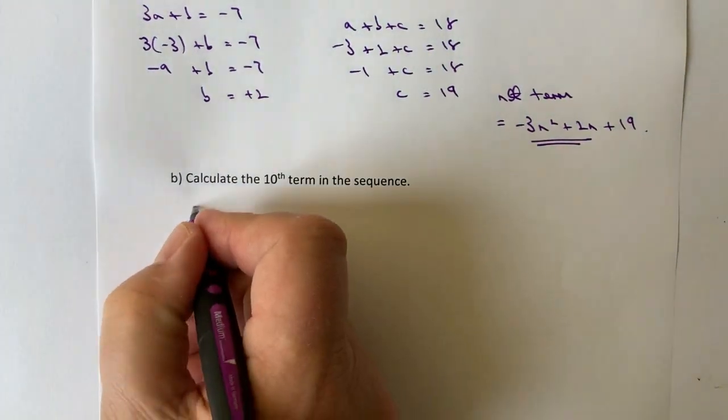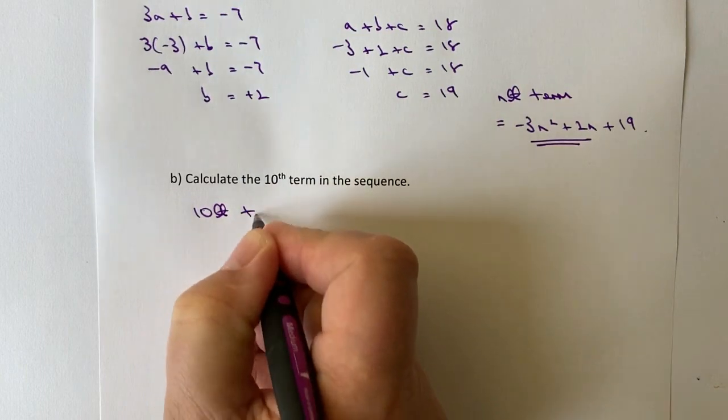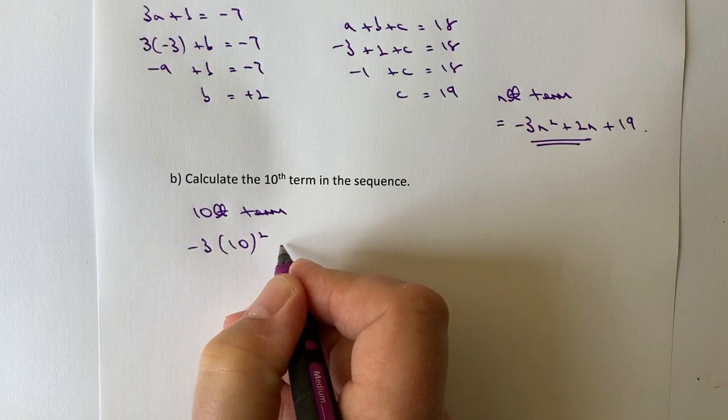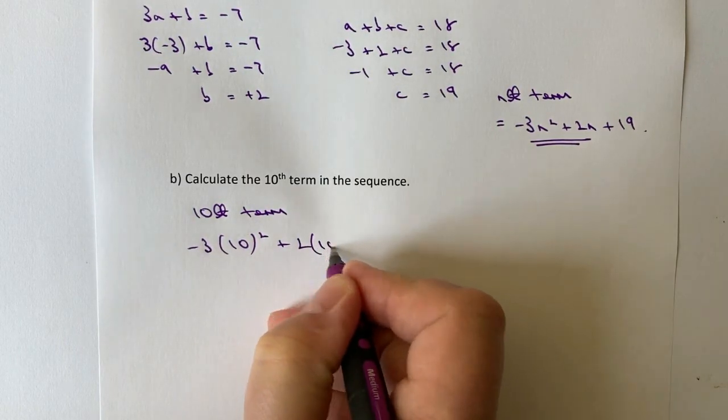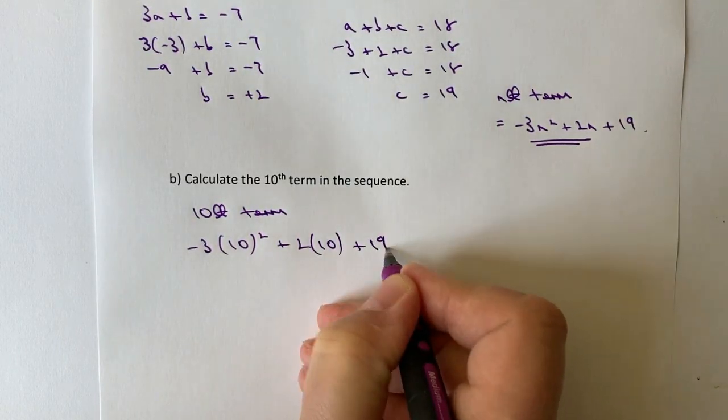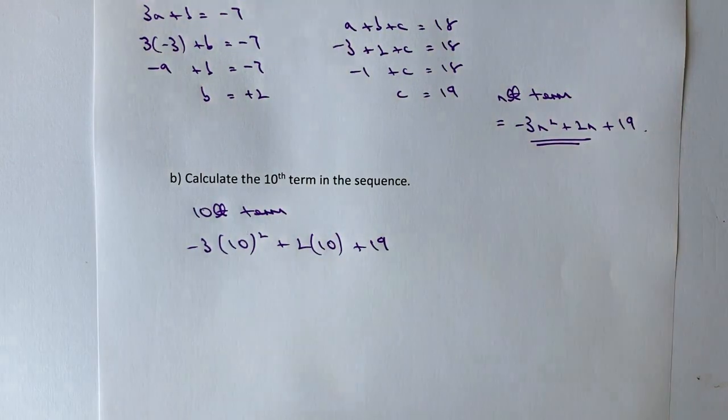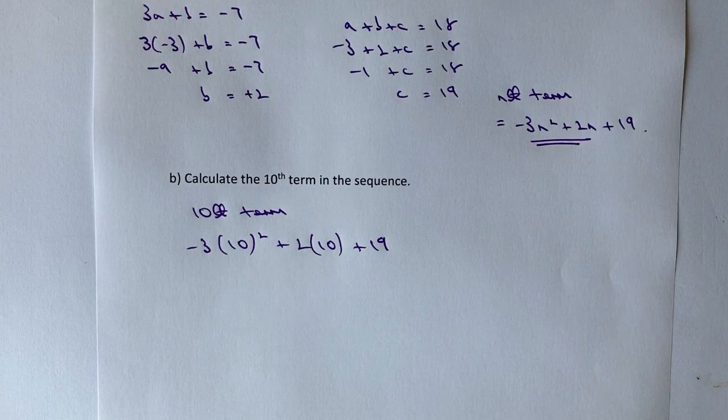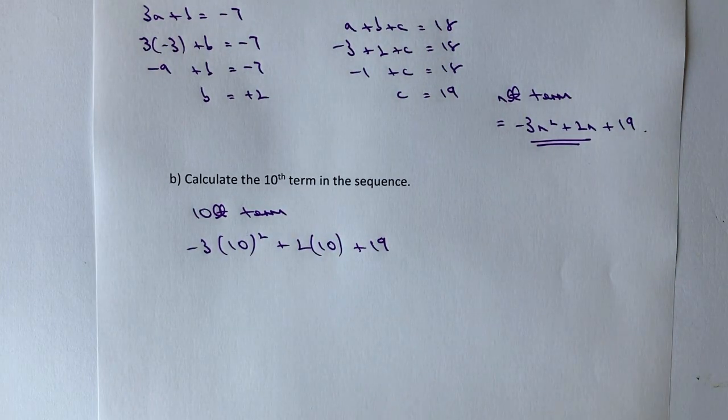So the 10th term is going to be minus 3 times 10 squared plus 2 times 10 plus 19. So be careful here, because we've got to adhere to BIDMAS, which is the order in which we do things. So we're going to work with the index first, so 10 squared is 100.